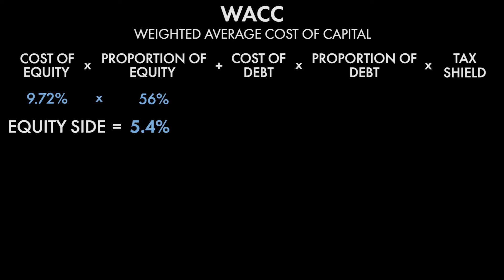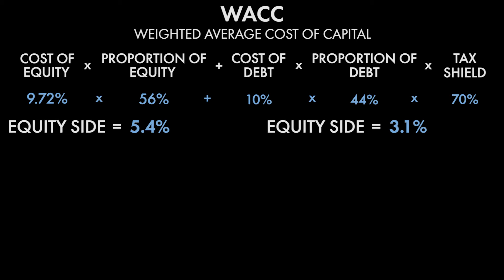Now let's do the debt half. The easiest way is to start with the tax shield, which is just one minus your tax rate. Our tax rate was 30%, so one minus 30% is 70%. For the debt side of the equation, we multiply our 10% interest payment times the 44% that debt makes up of the capital structure, times 70%. That gives us 3.1% — the debt side of the equation.